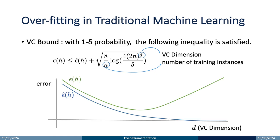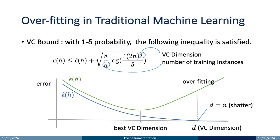Based on this bound, we can draw the following plot. The x-axis is the VC dimension and the y-axis is the error. The blue curve is the training error and the green curve is the testing error. When the VC dimension equals the number of samples, the model can perfectly classify all training samples, making the training error zero. This situation is called shattering. In this case, the generalization gap will be very large and severe overfitting will happen. Hence, the best VC dimension is much smaller than the number of samples, at which point the testing error reaches its minimum.